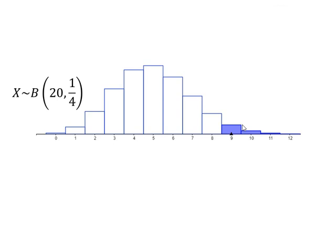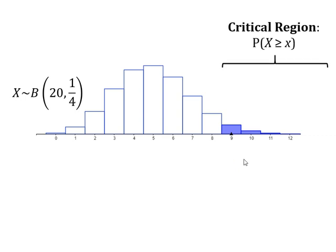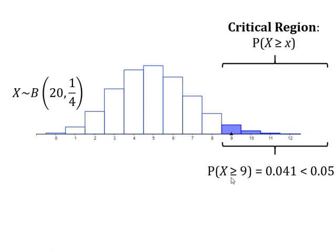Looking back at the graph, we got nine blues. We would want to find the probability of getting nine or more — nine or more extreme. We would expect to get five, and nine is more than five, so nine or more extreme means nine or more. That is our critical region. We want P(X ≥ 9) to be less than 5%. Using your calculator, work out the probability that x is less than or equal to eight first, then find P(X ≥ 9).